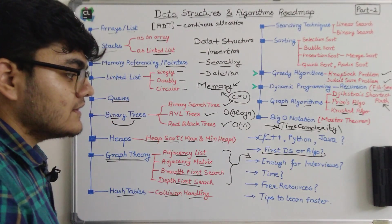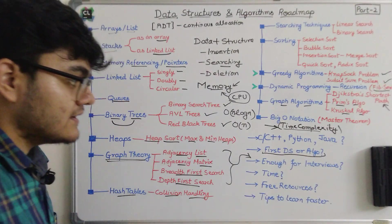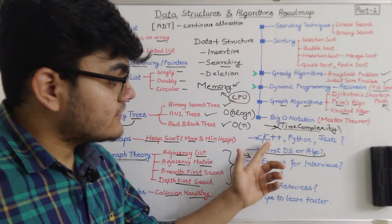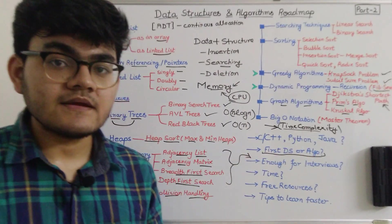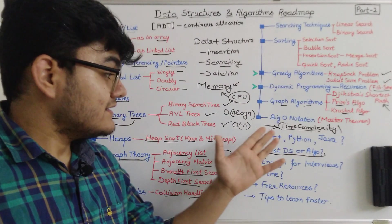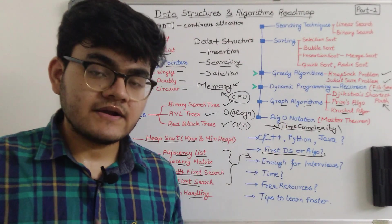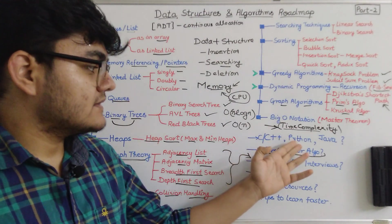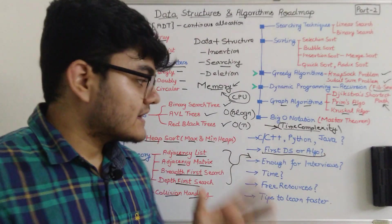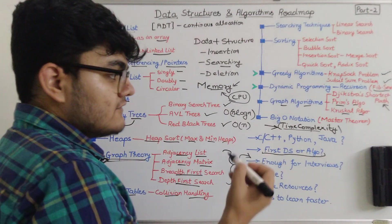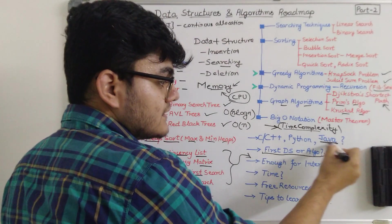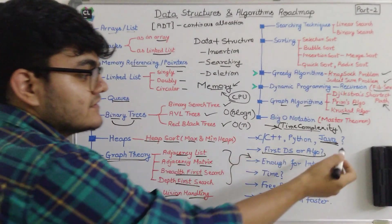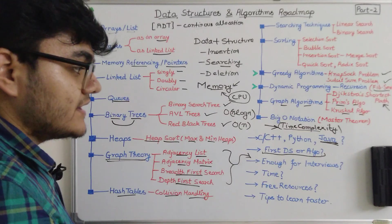Now let's move to some questions you've asked. The first is: which programming language should you use — C++, Python, or Java? My recommendation is that if you want to become an Android developer, you will have to study these algorithms in Java, since Java is used for Android development.